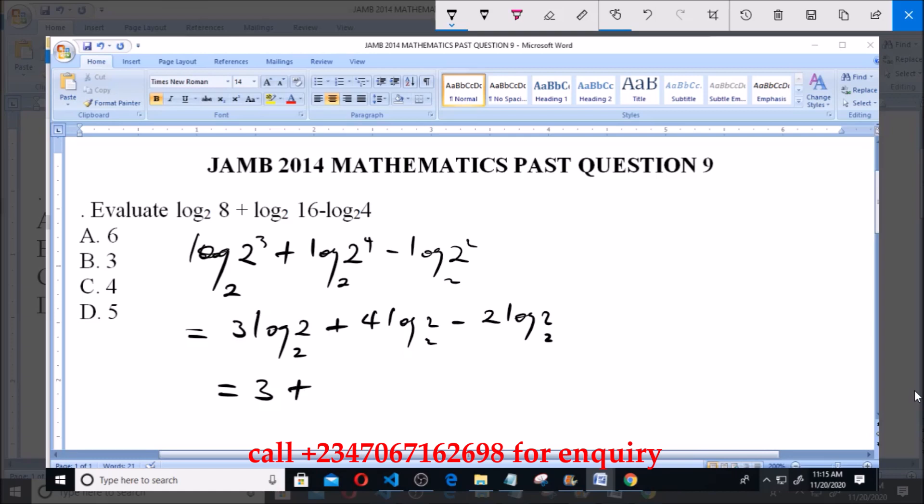This equals 3 (since log 2 base 2 equals 1) plus 4 (log 2 base 2 equals 1) minus 2 (log 2 base 2 equals 1), which gives us 7 minus 2, which equals 5.